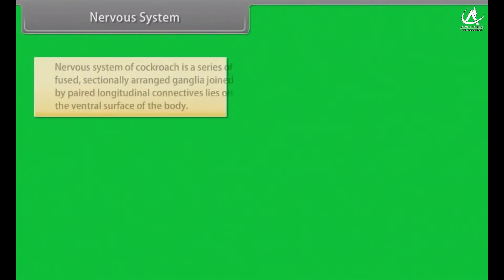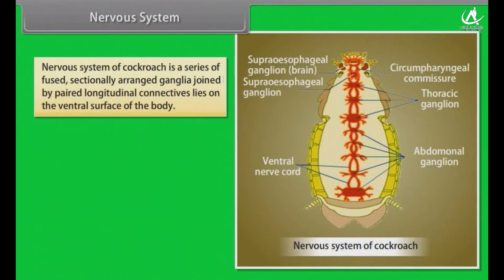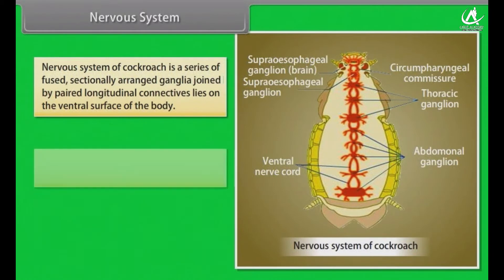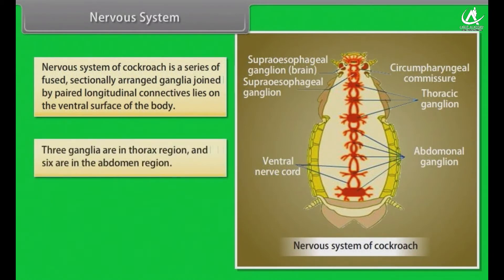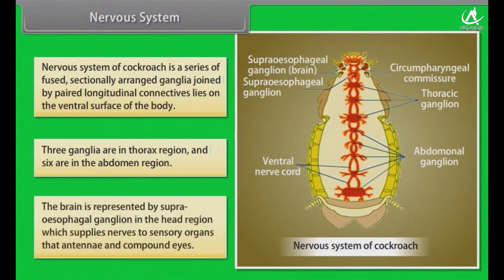Nervous system. The nervous system of cockroach is a series of fused segmentally arranged ganglia joined by paired longitudinal connectives on the ventral surface of the body. Three ganglia are in the thorax region and six are in the abdomen region. The brain is represented by the supra-oesophageal ganglion in the head region, which supplies nerves to sensory organs — the antennae and compound eyes.